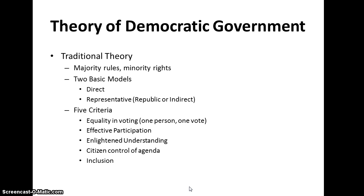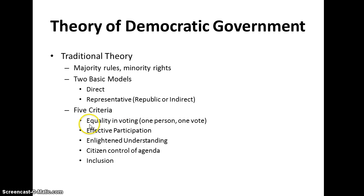The third criterion is enlightened understanding — it's citizens' responsibility to be aware of what's going on in the government and to do something about that. The news media plays an important role in helping with this enlightened understanding. Fourth is citizens' control of the agenda. By and large, the agenda is set by people in power, but we elect them, and we can shift and control the focus by participating, by understanding, and by having equality in voting.